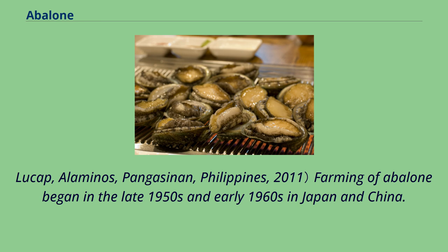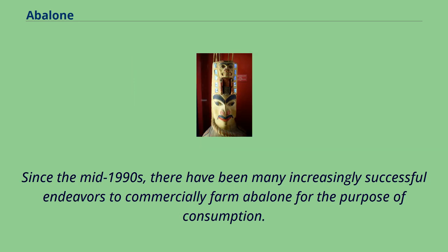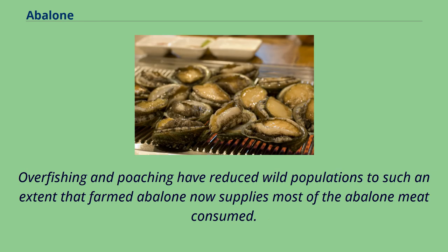Farming of abalone began in the late 1950s and early 1960s in Japan and China. Since the mid-1990s, there have been many increasingly successful endeavors to commercially farm abalone for the purpose of consumption. Overfishing and poaching have reduced wild populations to such an extent that farmed abalone now supplies most of the abalone meat consumed.